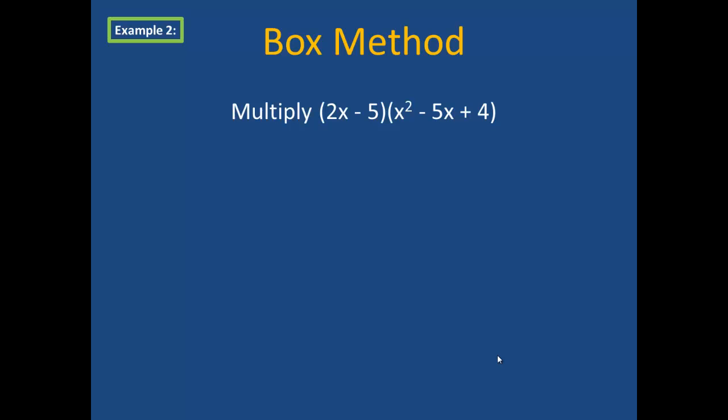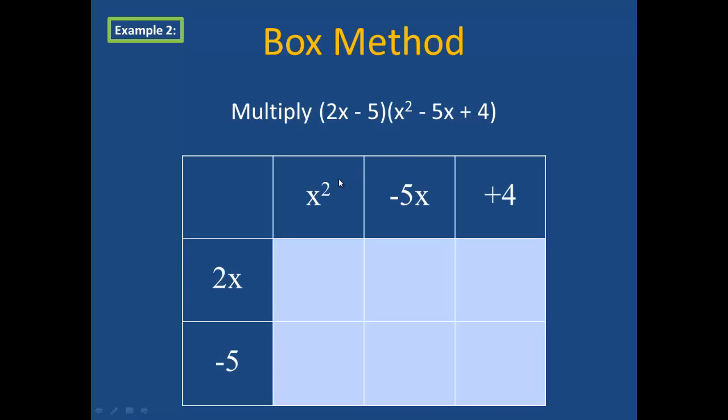The next method that we're going to take a look at is the box method. In example 2, we will be multiplying 2x minus 5 times x squared minus 5x plus 4. So first thing we need to do is set up a box. I chose to make my box 3 columns wide, so I put the trinomial across the top, x squared minus 5x plus 4, and 2 rows tall, so that I have 2x minus 5 on the side.